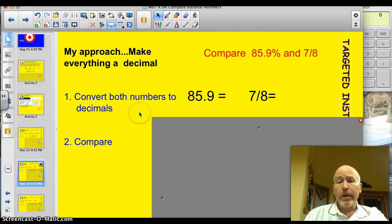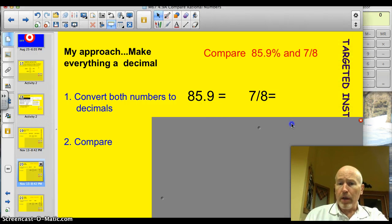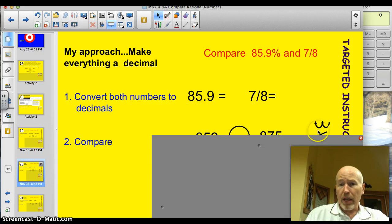Step 1. Convert both numbers to a decimal. We've got to compare 85.9% and 7 eighths. So, let's convert both the decimals. Let's start off with this one here. When we've got ourselves a percentage like that, get rid of the percentage sign, and remember how we just take and move the decimal over. So, we're going to get 0.859.